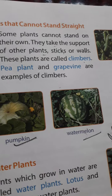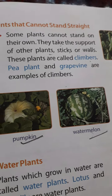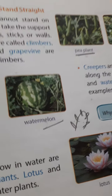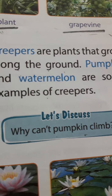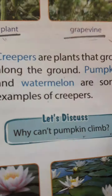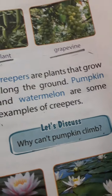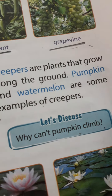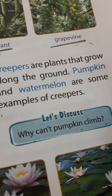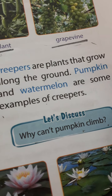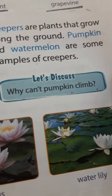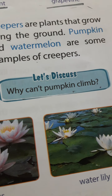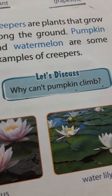Some plants cannot stand on their own. These are called creepers — plants that grow along the ground. Pumpkin and watermelon are examples of creepers. Creepers grow along the ground and cannot climb.